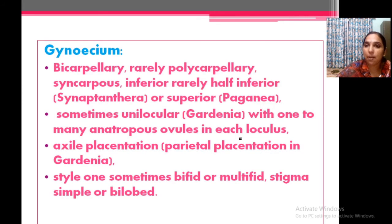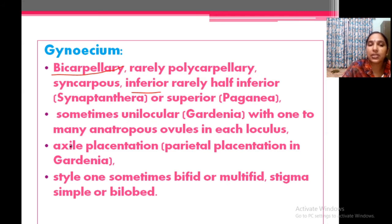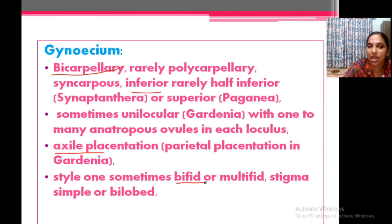The gynoecium is very important — bicarpellary gynoecium, syncarpous, inferior. Bicarpellary is a very important point. You have to remember the bicarpellary condition. Inferior ovary is another important point. Rarely half-inferior, that is perigynous. Usually bilocular condition, but in some cases unilocular may occur. Placentation is typically axile; in some cases parietal placentation. The style is bifid — that is the bicarpellary condition of carpels because the style is also bifid. Stigma is simple.